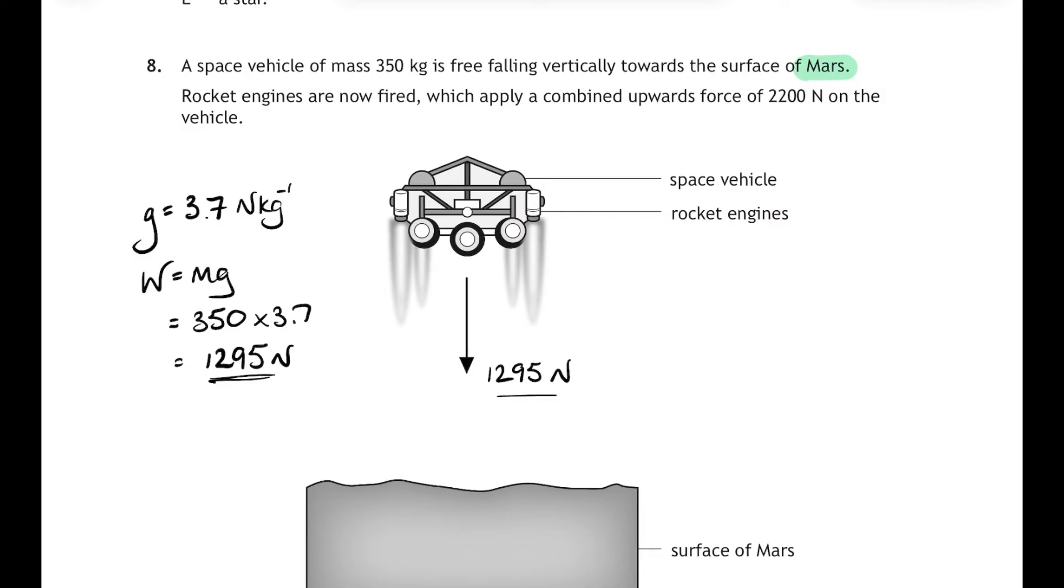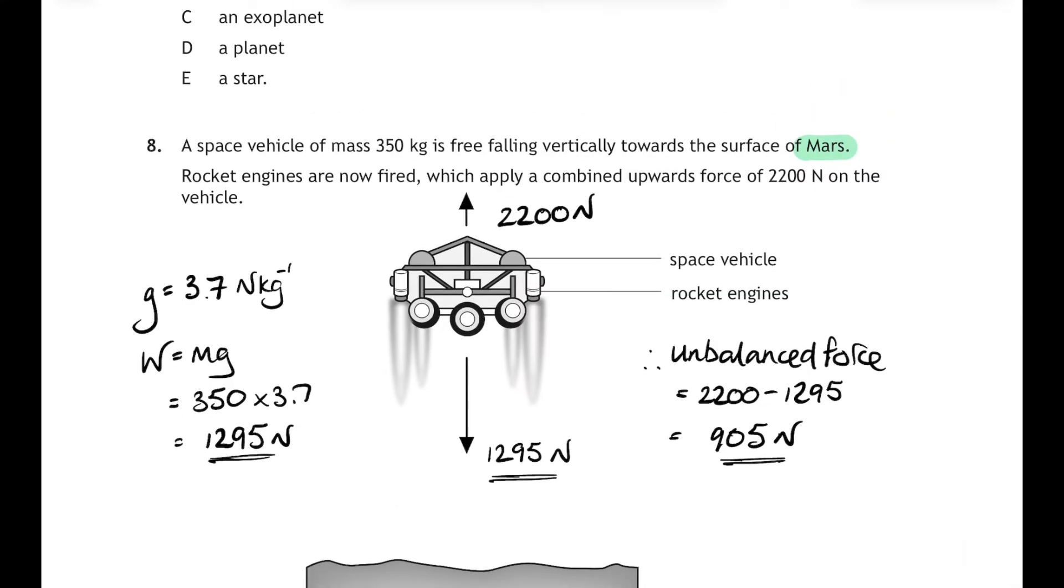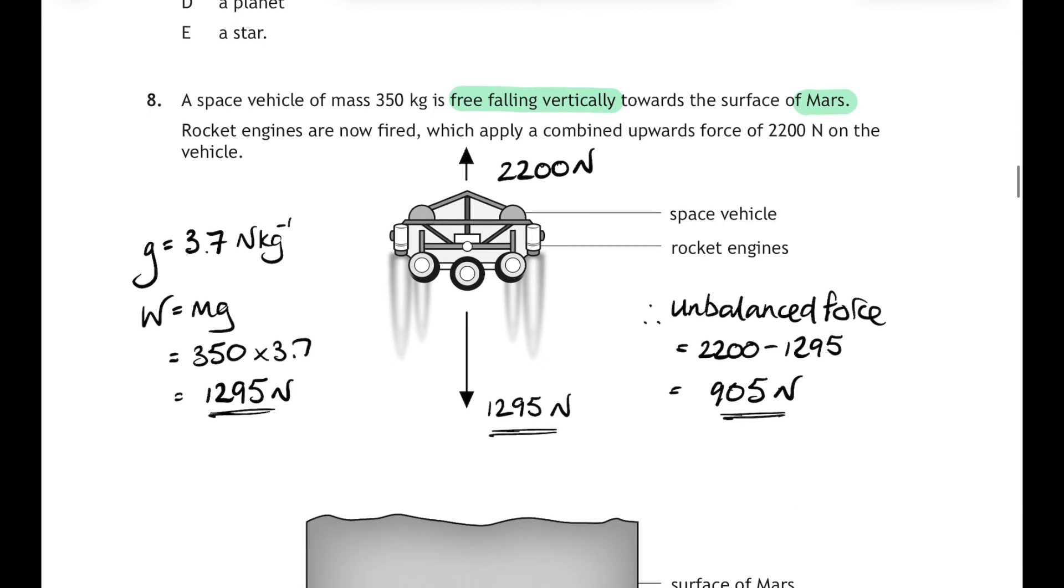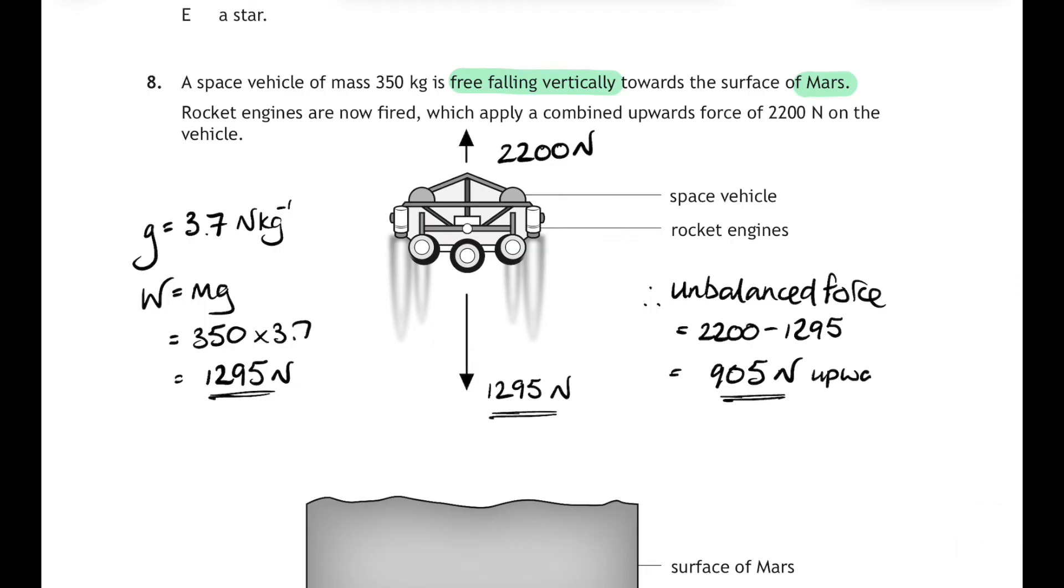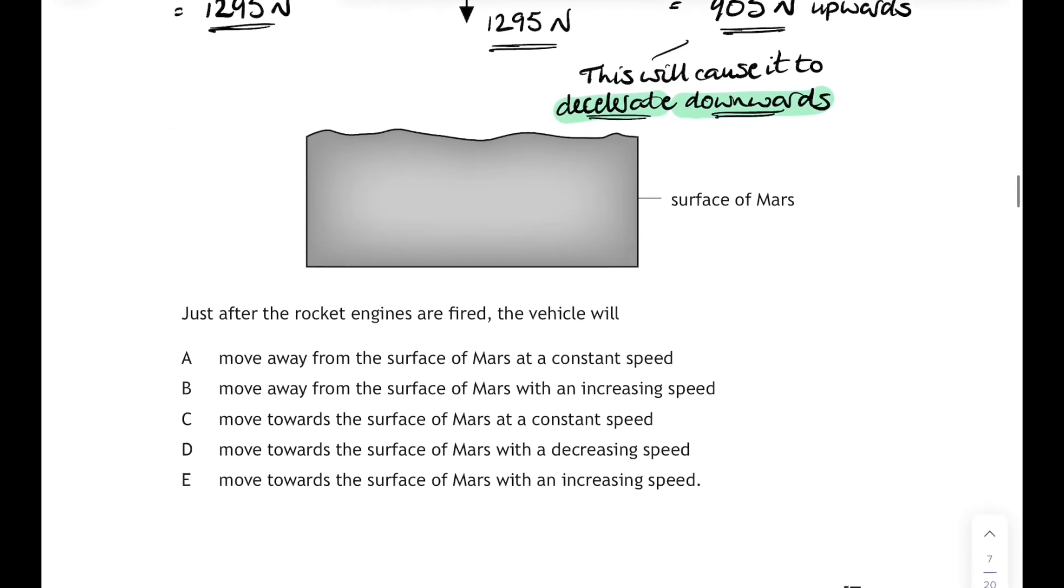And let's show both of those forces on the diagram, so the weight downwards 1295 newtons and the upwards force, the rocket engine force, is 2200 newtons. So there's an unbalanced force upwards of 905 newtons. And remember, we're told that the space vehicle is free falling vertically towards the surface of Mars. Now let's have a look at the question, and see: just after the rocket engines are fired, the vehicle will—well, if there's an unbalanced force acting upwards, then this will cause it to decelerate downwards. So it's going to slow down on the way towards the planet.